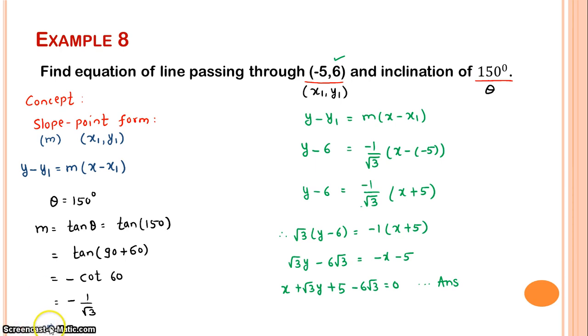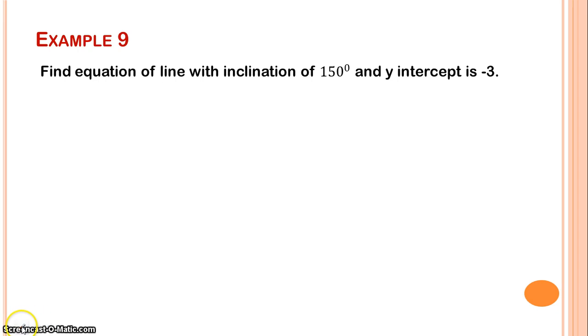So using slope and point, you can find the equation of line. Clear? Right. Let us see the next example. Example 9: Find equation of line with inclination of 150 degrees and y-intercept is -3.